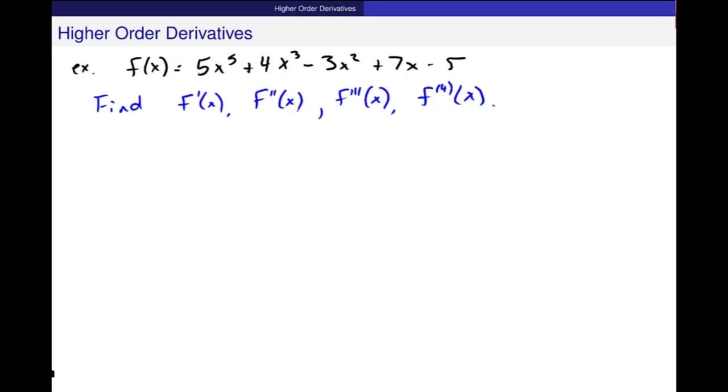So I want to go ahead and do that. I definitely know and can use all of my rules in order to take the first few derivatives. So let's say, let's go ahead and compute this, f prime of x. And I use this power rule, so I get 25x to the fourth, plus 12x squared, minus 6x, plus 7, and the 5 becomes 0.